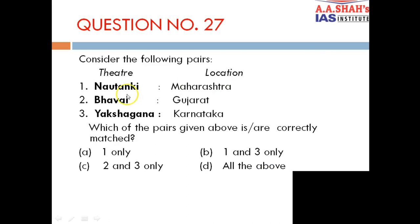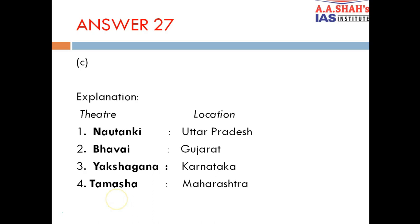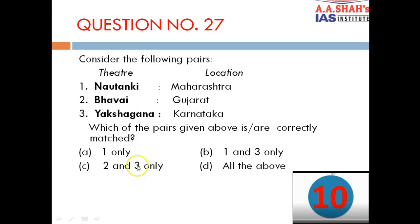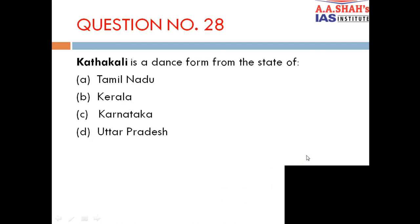Question 27: Consider the following pairs — theatre form and location. 1. Nautanki, Maharashtra. 2. Bhawai, Gujarat. 3. Yakshagana, Karnataka. The correct answer is C — two and three only. Bhawai is from Gujarat and Yakshagana is from Karnataka — both correctly paired. Nautanki is not from Maharashtra; it is a theatre form from Uttar Pradesh.